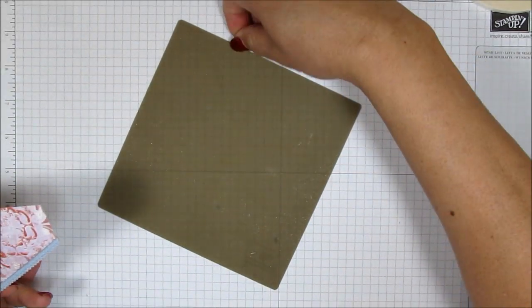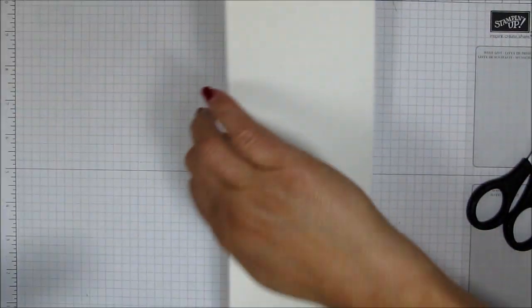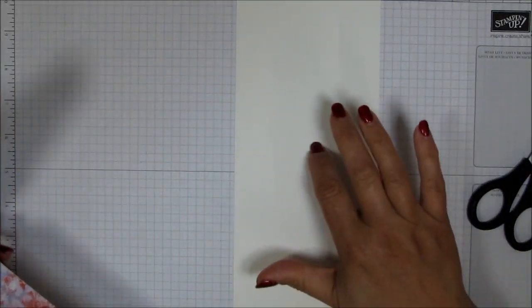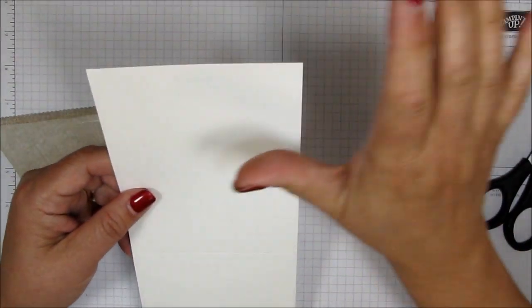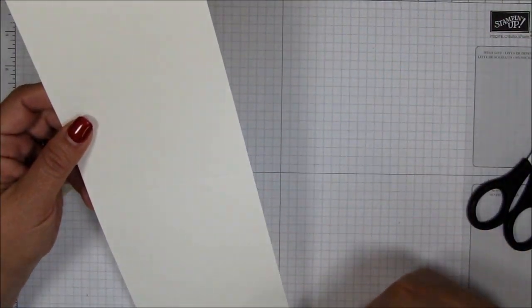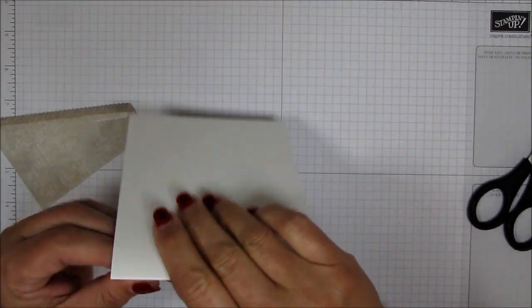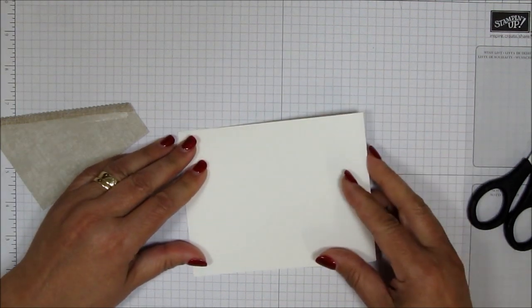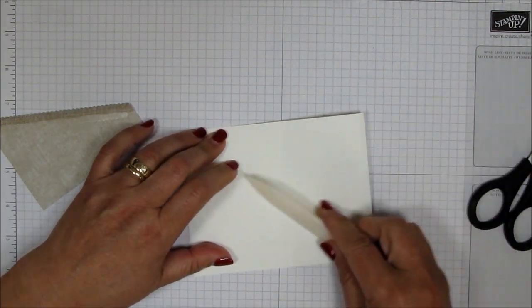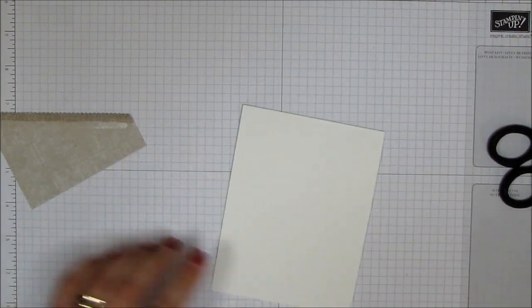And I can go ahead and put them on my card base. And now my card base is a piece of thick Whisper White cardstock that measures 4 1⁄4 by 11. And I've scored it in half at the 5 1⁄2 mark. And we're just going to fold that in half here. And we'll score it. I mean, we'll burnish it with our bone folder.